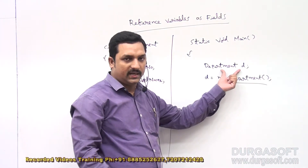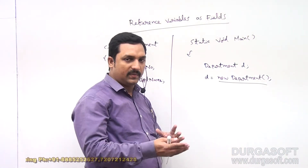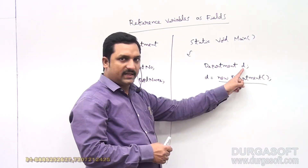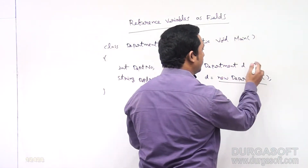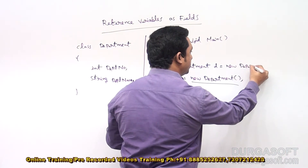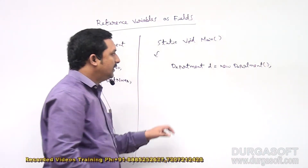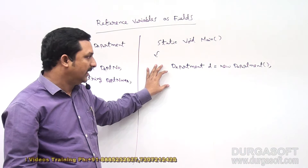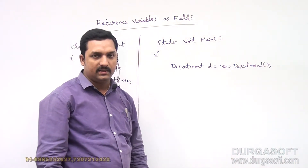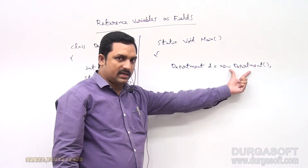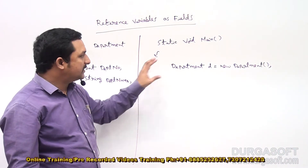Can we combine these two statements into a single statement? The first part is creating a reference variable, the second part is creating the object and storing that object address into the reference variable. Yes, we can combine them: Department D = new Department. Both forms are equal — whether written separately or combined. Department D means creating a reference variable, and new Department means creating an object whose address is stored in D.